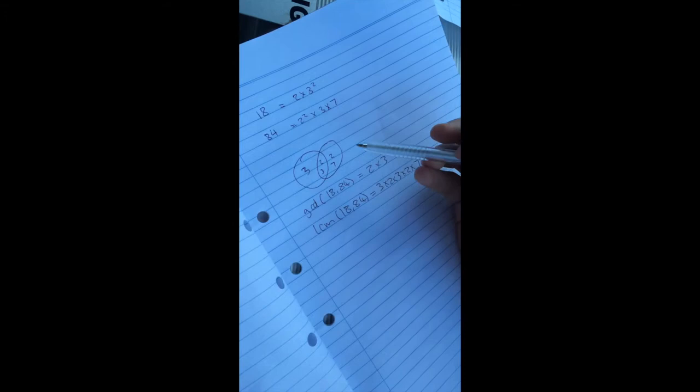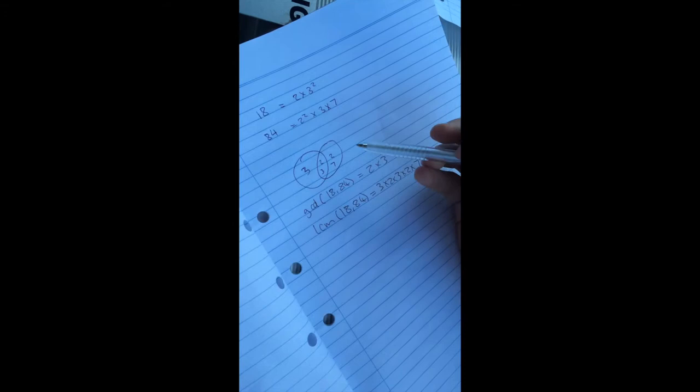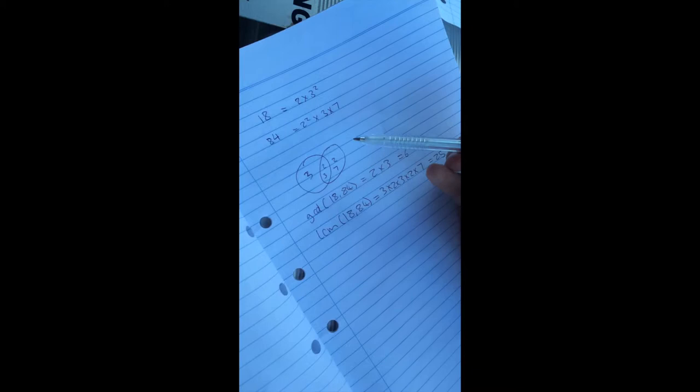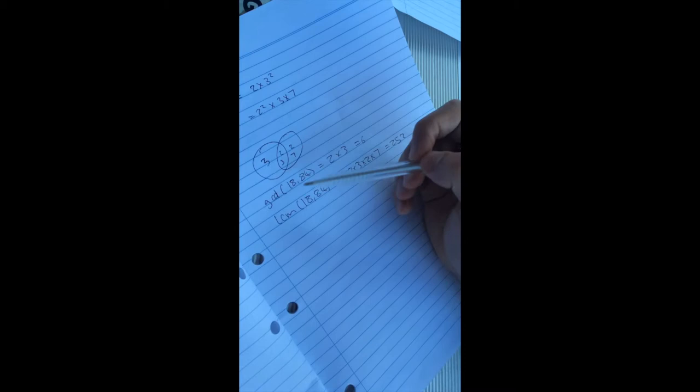Okay, so we do this because the 18 and the 84 both have a 2 and a 3 in common. So for something to be a divisor of it, it would need to be a multiple of both 2 and 3, and the greatest one we can have there is 6.